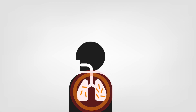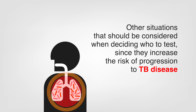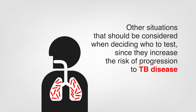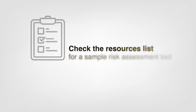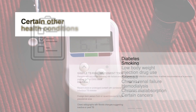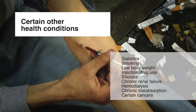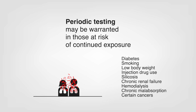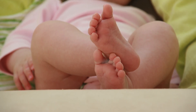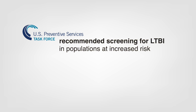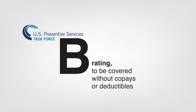There are other situations that should be considered when deciding who to test, since they increase a person's risk of progression to TB disease if they are infected with TB bacteria. Asking a few simple questions will help to assess a person's risk for TB infection and help determine who should be tested. Check the resources list for a sample risk assessment tool. Certain other health conditions increase the risk of progression to TB disease. Periodic testing may be warranted in people with these conditions who are at risk for continued exposure. Children under 5 years of age are also at high risk if infected because they can progress to TB disease very quickly and the disease can be severe.